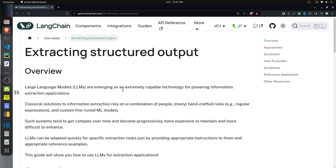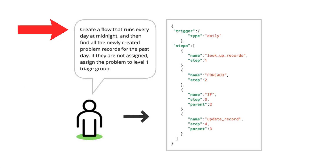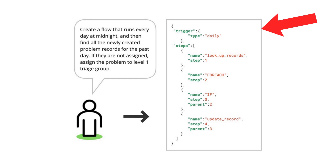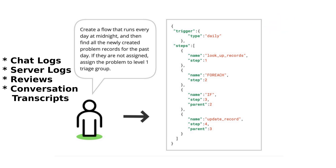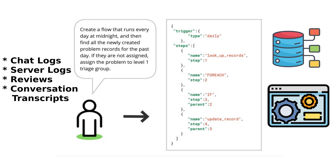One useful application of LLMs is the extraction of structured data from unstructured data. You can get an LLM to read natural language, identify semantically important details such as names, dates, addresses, and figures, and write them in a consistent structured format regardless of the source format. This can be especially useful when you have unstructured source material like chat logs, server logs, and conversation transcripts. Once you have structured data, you can send them to a database or parse structured outputs in code to automate workflows.